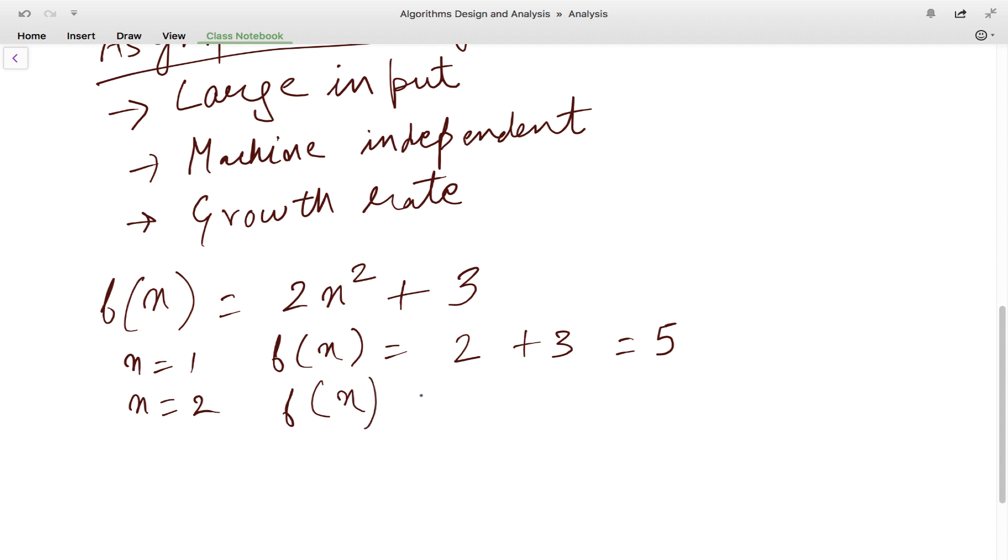For n equal to 2, f(n) will become 2 into 2 squared plus 3 and that is nothing but 8 plus 3, equal to 11. For n equal to 3, f(n) will become 2 into 2 cubed plus 3 and that is equal to 19.